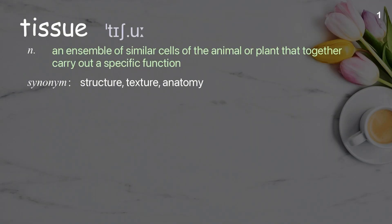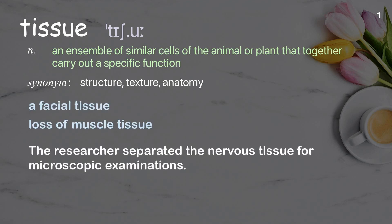Tissue: an ensemble of similar cells of an animal or plant that together carry out a specific function. Examples: facial tissue, loss of muscle tissue. The researcher separated the nervous tissue for microscopic examinations.